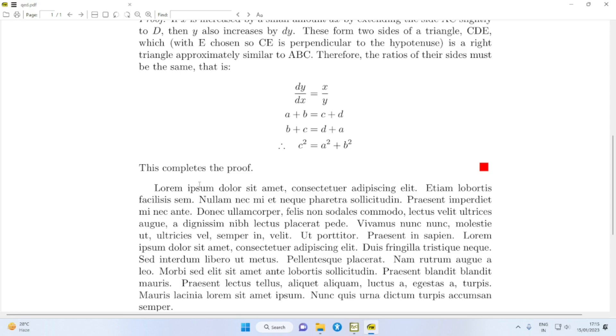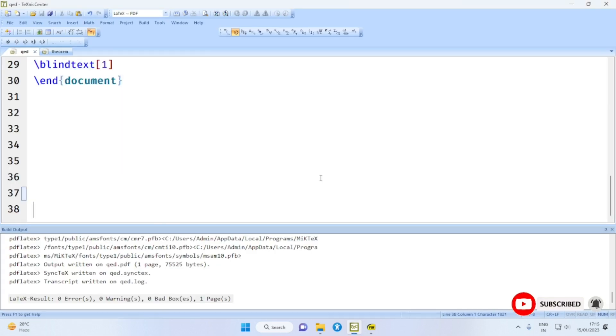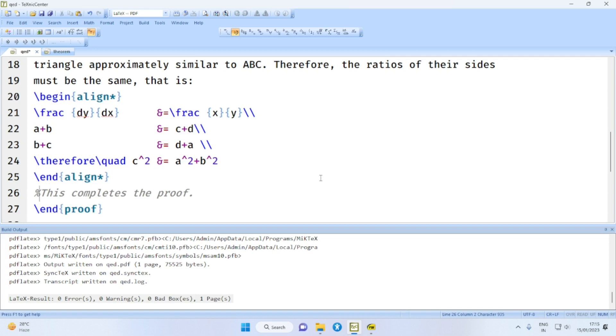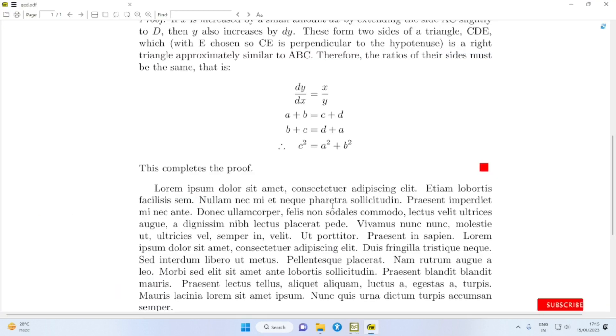Now suppose this statement is not there—'this completes the proof.' Let's say this is not there. Then what will happen is on compilation you will find an empty line at the end of which you have this end of proof QED symbol here.